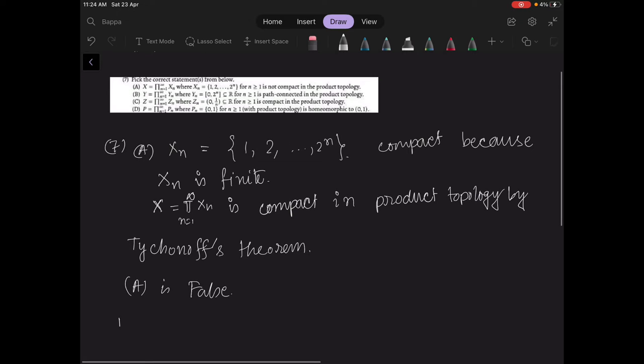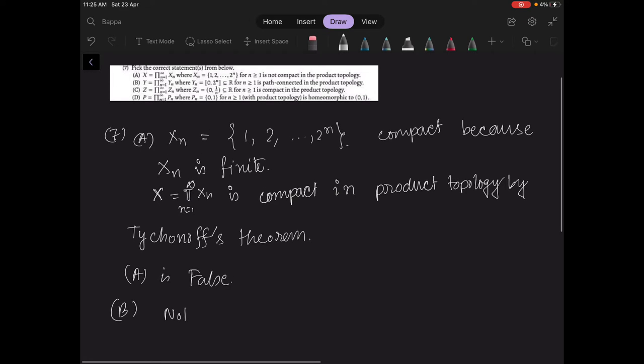Now move to option B. It says that product of yn is path connected in the product topology, where yn equals 0 to 2 to the power n subset of R. Notice each yn is path connected.